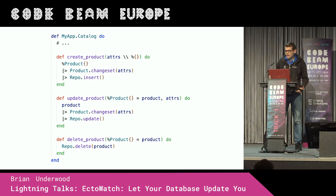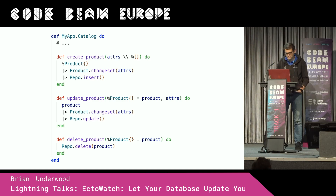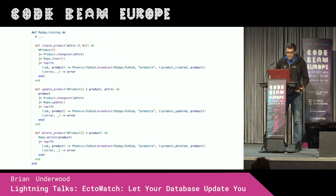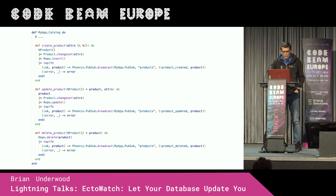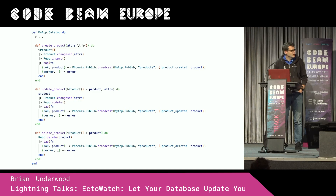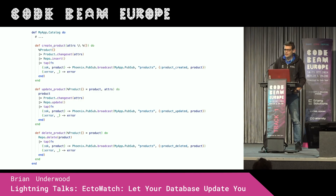But sometimes maybe you want to have reactivity. Maybe you want to be able to have your LiveViews elsewhere update whenever something is updated. If you have a product that's updated, you want a LiveView to update to show the newest information. So one solution I've seen a couple of times is you go into those functions and you add some PubSub broadcasts. And this kind of doubles the functions a bit, but it does the job.